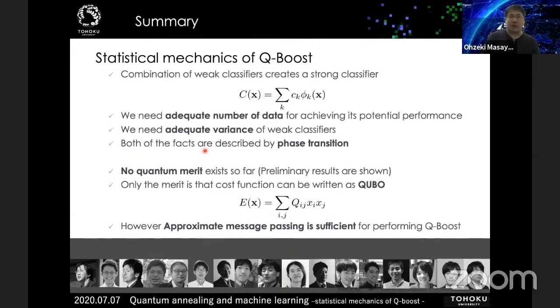In summary, we analyzed the statistical mechanical performance of QBoost — an application to machine learning of the quantum annealer. We need an adequate number of data and adequate variance strength of weak classifiers; when both conditions are satisfied, you can find a sudden change in the typical performance of the combined classifier. That's all. Thank you.